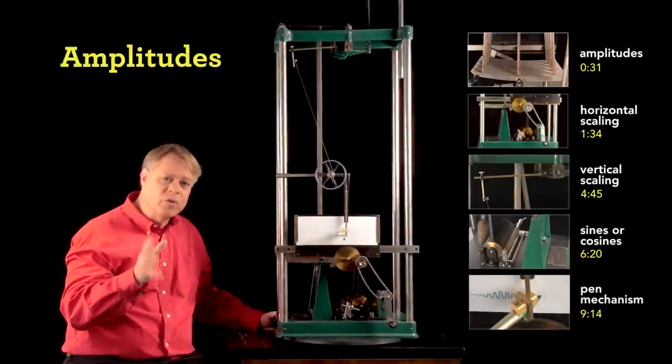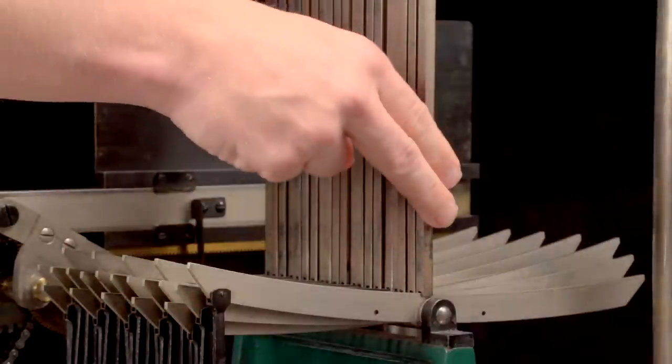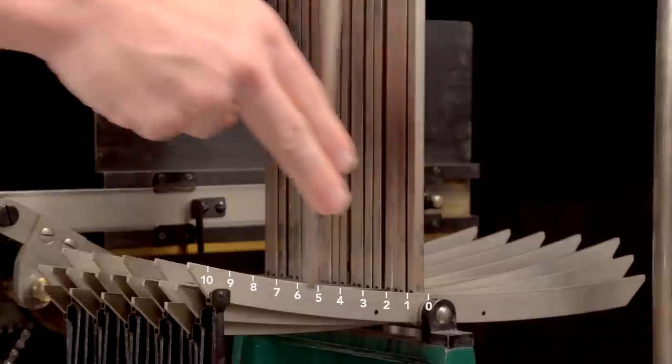Let's start with setting the 20 amplitude bars. As we saw in earlier videos, this lever's position on the rocker arms determines the value of the coefficient.